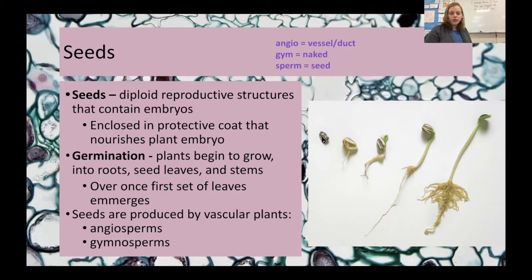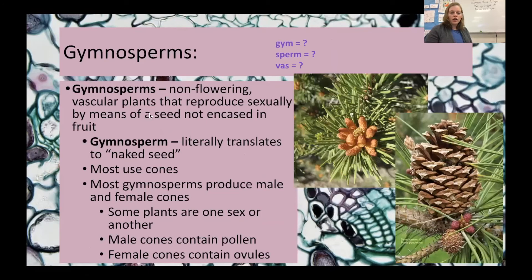The process of germination goes from seed to the first leaf or first two leaves. Seeds are only produced by vascular plants — those that can pull water from the ground using special structures. These are called angiosperms and gymnosperms. Gymnosperms are non-flowering plants that reproduce usually with cones. They do use pollination but without pollinators — they use wind pollination. If you've ever seen wind blowing through pine trees in early spring, you'll see clouds of pollen. They produce tons of pollen because nothing is directly carrying it from one cone to the next.